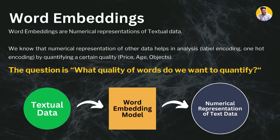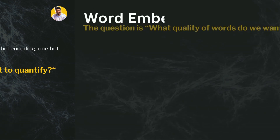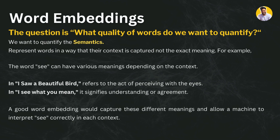Word embeddings are the numerical representation of textual data. We know that numerical representation of data helps in analysis. We can easily convert categorical variables to numerical variables using label encoding, one-hot encoding, and by quantifying certain qualities like price and age. For sentence or word data, the quality we want to quantify is semantics — we want to capture the context, not just the exact meaning of the words, to know in which context a word is used in a whole sentence.